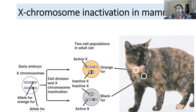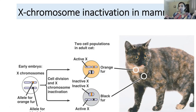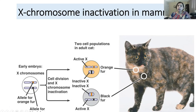X chromosome inactivation, specific to mammals, happens in early female embryos. A female cat has two X chromosomes — one from mom, one from dad — where one may carry the orange fur allele and the other the black fur allele. As cells divide, one X is randomly inactivated in each cell, so some cells produce only orange fur while others produce only black fur, leading to the calico cat pattern with patches of both orange and black fur in different portions of the body.